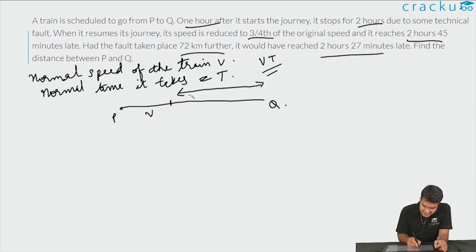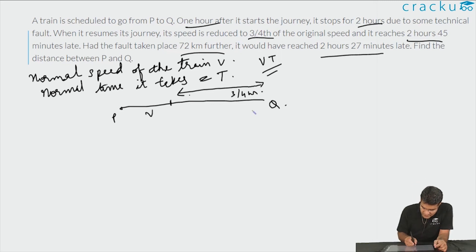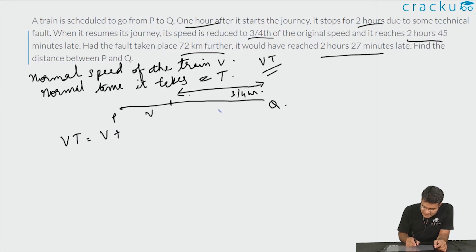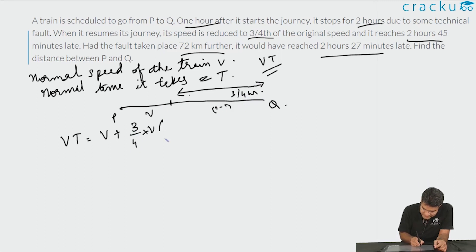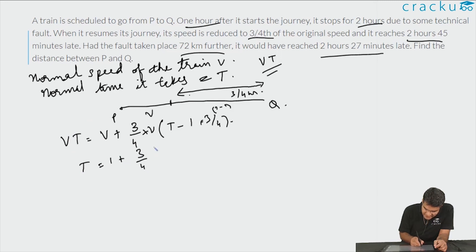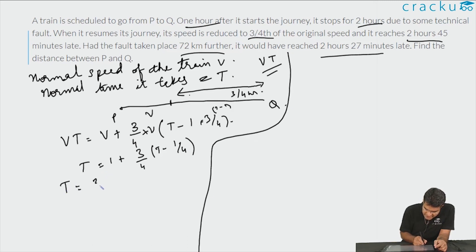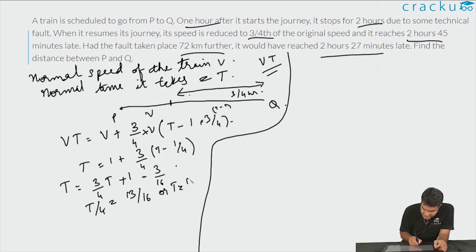Let the normal speed be V and normal travel time be T. The total distance is V×T. Using the first condition: VT = V + (3/4)V × (T − 1) + (3/4), which simplifies to T = 1 + (3/4)(T − 1/4). Solving gives T = 13/4 hours.